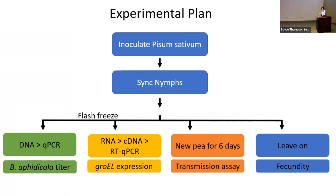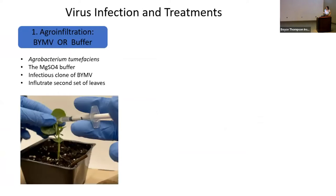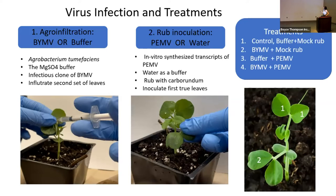Our experimental plan began with inoculating Pisum sativum, our model plant. We did this in two ways. For BYMV, we used agroinfiltration with Agrobacterium tumefaciens carrying infectious clones of BYMV, injecting a syringe through a small hole into the leaf on the second set of leaves. For PMV, we used rub inoculation on the first true leaves, applying a chemical called carborundum — a very fine powder — along with the viral transcript in water, rubbing it into the leaves. Plants were then allowed to develop for 14 days until symptomatic.